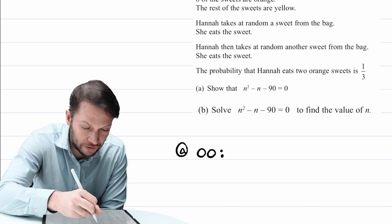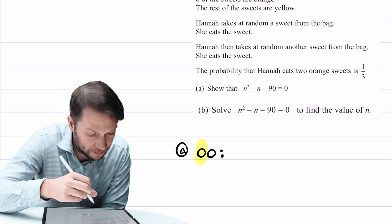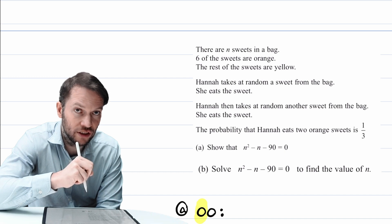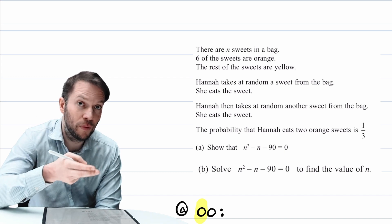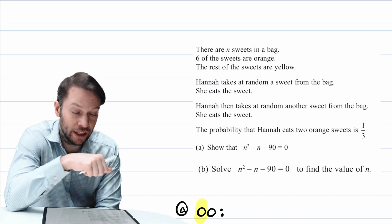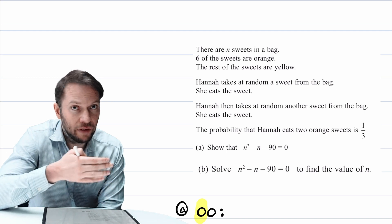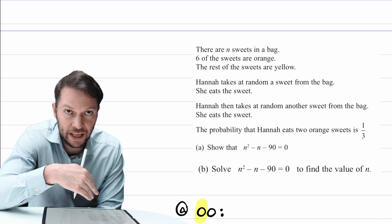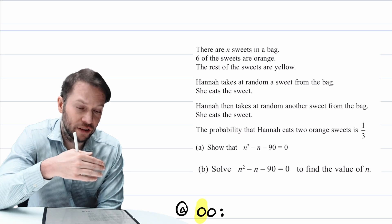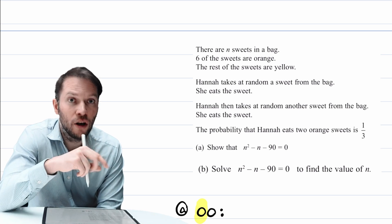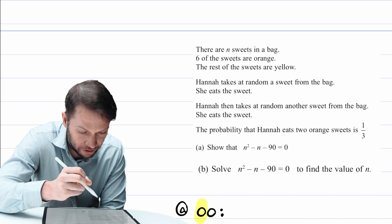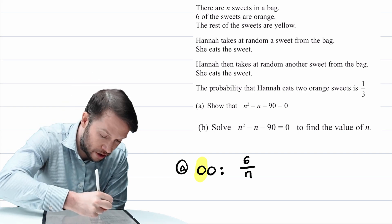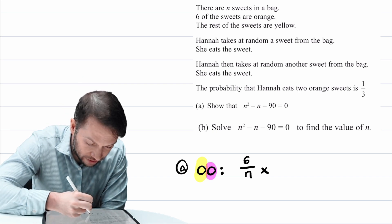Now, what's the probability that this first sweet that we eat is orange? Well, we're told there's n sweets in the bag and six of the sweets are orange. So if six out of the n sweets are orange, then the probability that the first sweet we randomly choose is orange is just going to be six out of n. And it doesn't make any difference just because the number of sweets in the bag is algebraic. It's n rather than an actual number. It's exactly the same principle. So we said it's six orange sweets out of the n sweets in the bag.